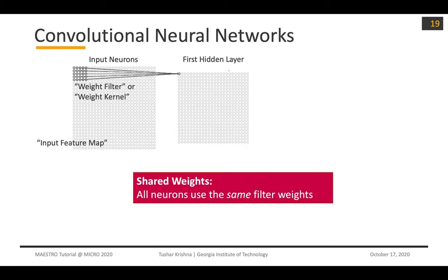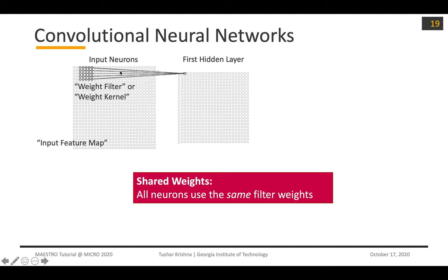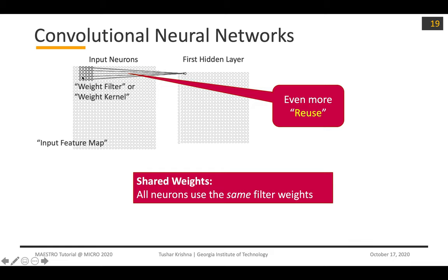If you go to more stylized neural networks, like convolutional neural networks, it's not just a simple multi-layer perceptron with fully connected layers one after the other. In a convolutional neural network, the weights are more stylized. You have shared weights, so all neurons use the same filter weights. From an architect's view, what this boils down to is that this weight kernel is now shifting. As this weight kernel shifts across an image, you get even more opportunities for reuse because of this sliding window.